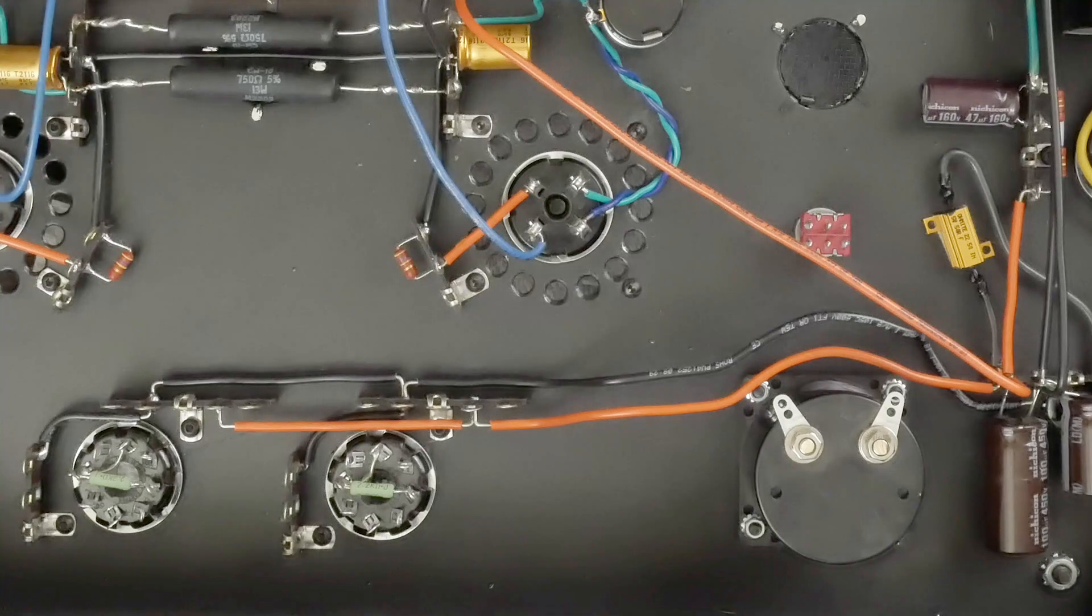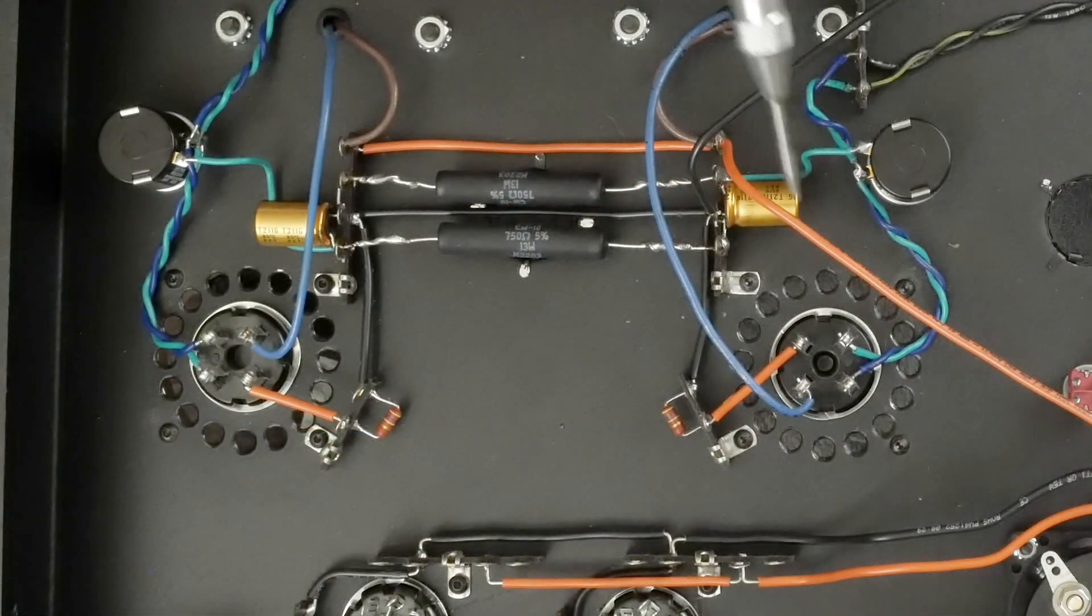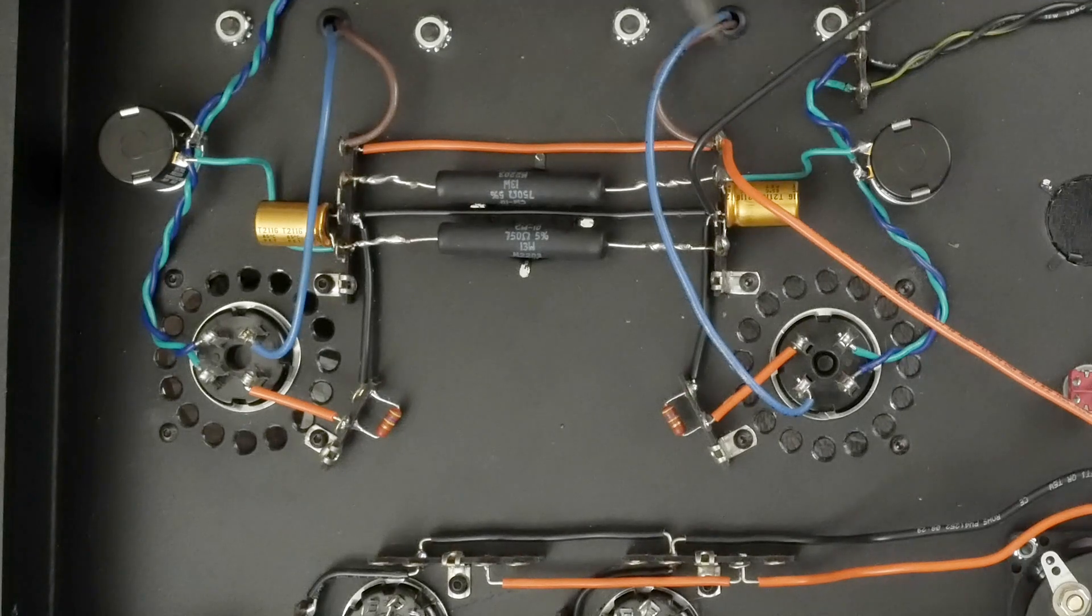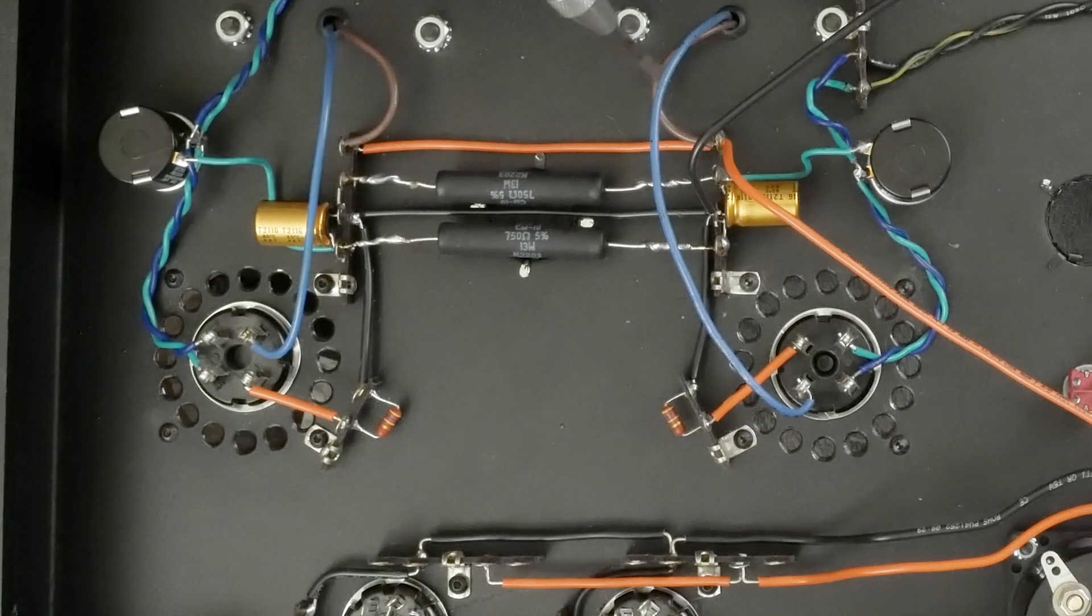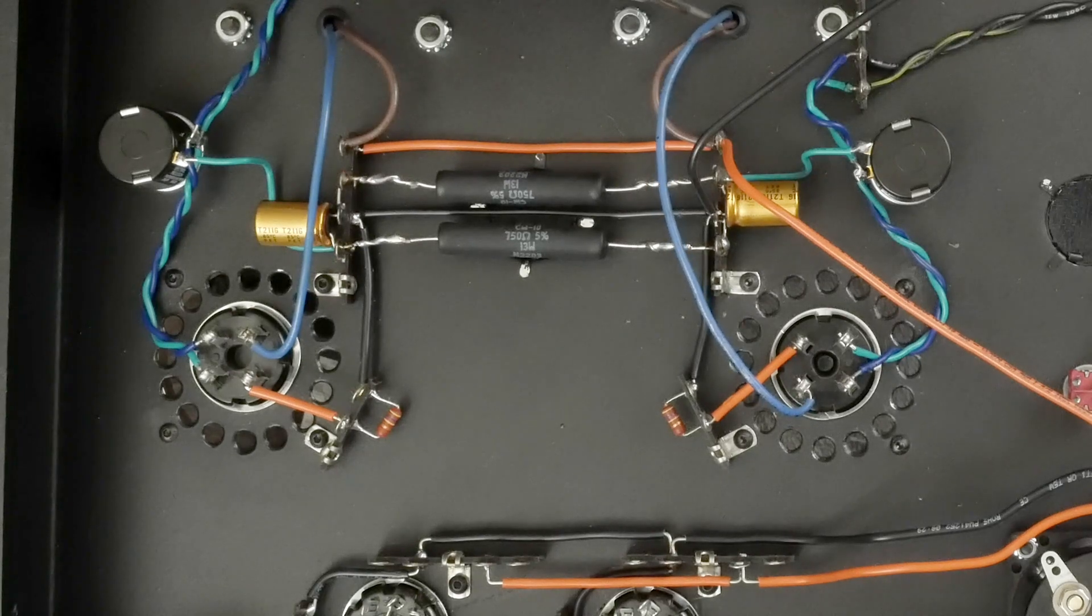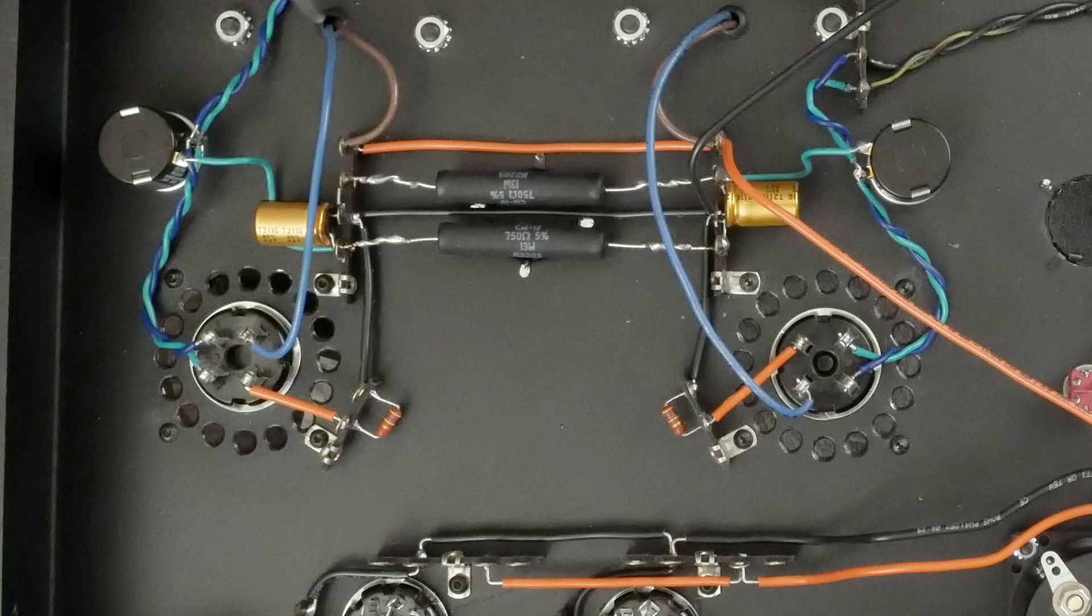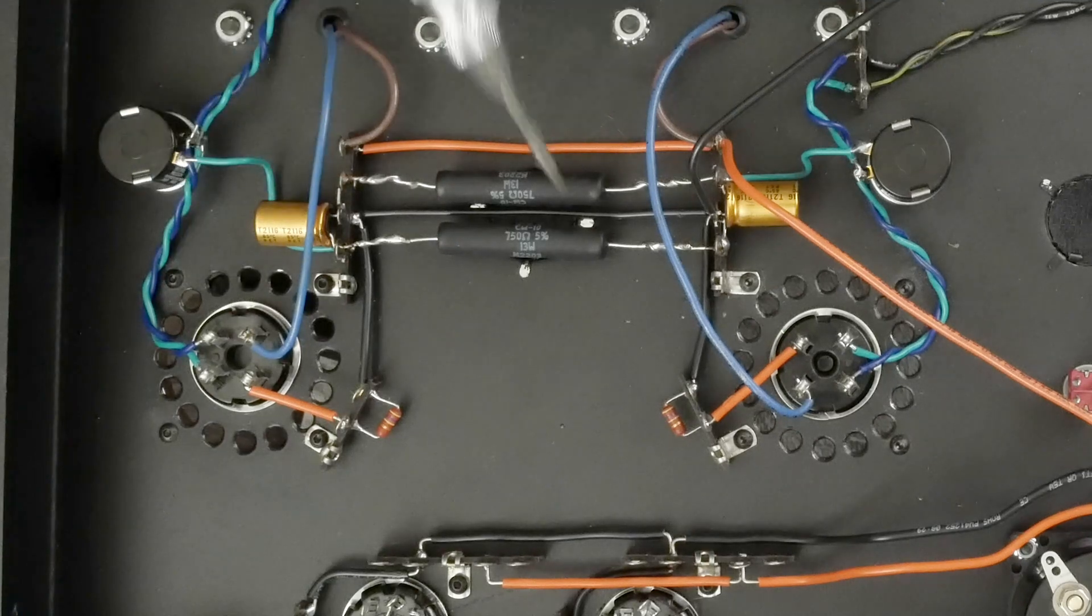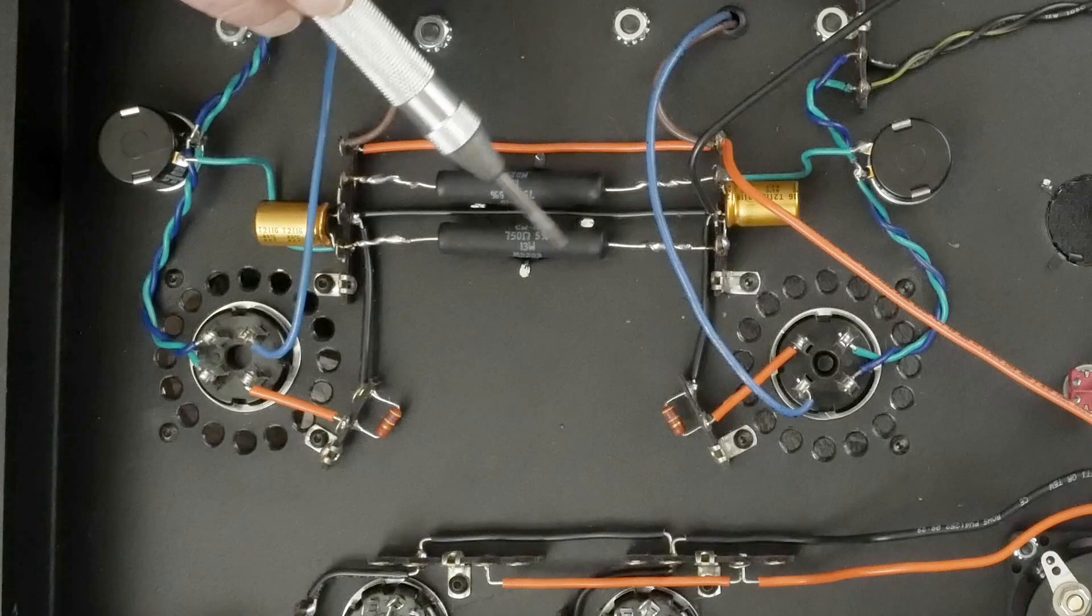Back to our output tube - we have our B+ that comes up here, then this B+ goes to the high voltage side to the output transformer, and this goes back to the plate. Same thing on this side. This was the ground for these cathode resistors, this center terminal.